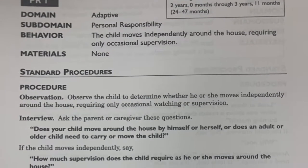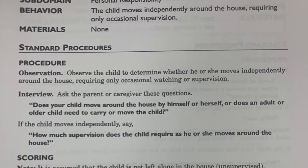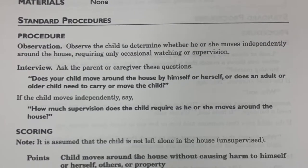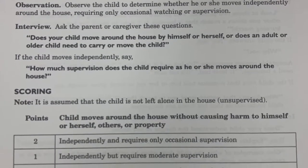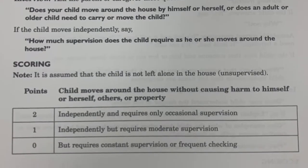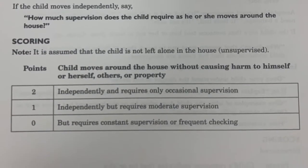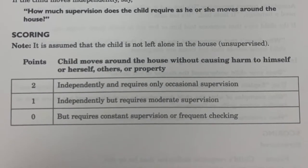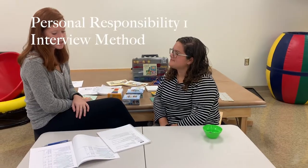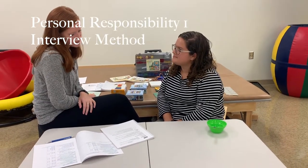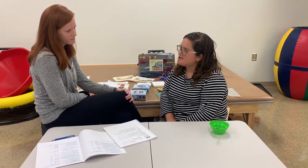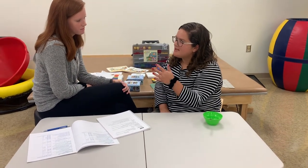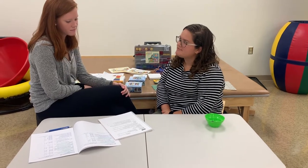For an observation style, observe the child to determine whether he or she moves independently around the house, requiring only occasional watching or supervision. Because we were not able to observe in a clinical setting, we conducted an interview: Does your child move around the house by herself, or does an adult or older child need to carry or move the child? She moves around pretty independently — sometimes I might have to help her, but usually independent.